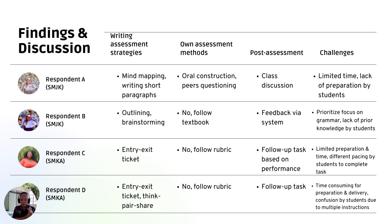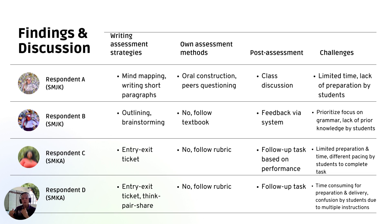When it comes to using unique assessment methods apart from the syllabus or textbook, only Respondent A uses oral construction and peer questioning, while the other three follow the rubric or the textbook. For post-assessment methods after the writing assignment, Respondent A discusses results in class; B gives feedback via the school's system; C and D use follow-up tasks. There is similarity between teachers from the same school, though A and B from the same school differ slightly in their practice.